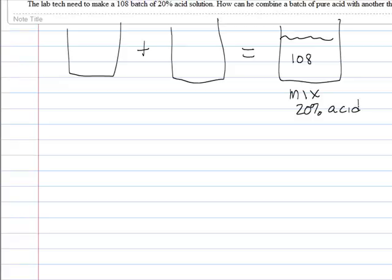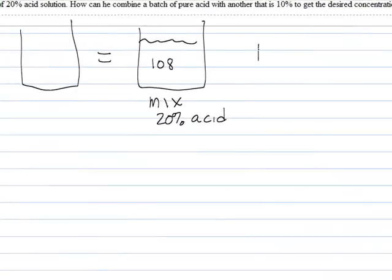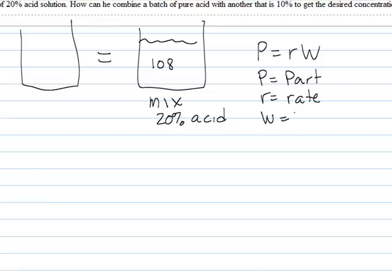So what does that mean? That means that 20% of this 108, P equals RW, is the formula I'm using, where P represents the part, R represents the rate, and W represents the whole amount.